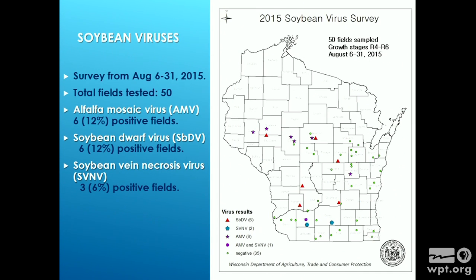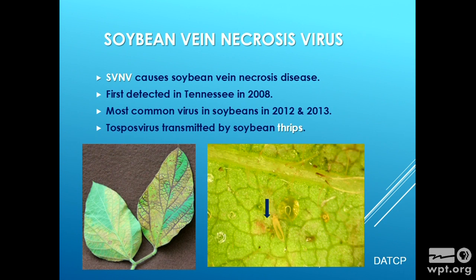This map shows where we found these different viruses in the state — basically where soybeans are grown. Six to twelve percent of fields were infected with alfalfa mosaic virus. Soybean dwarf virus was at 12 percent. Soybean vein necrosis virus was at 6 percent, which is significantly down. To understand soybean vein necrosis virus, we need to know that it's a TOSPOVIRUS transmitted by thrips, and the thrips count was down this year too. If you have no thrips, you have less virus because there are no thrips to transmit it.